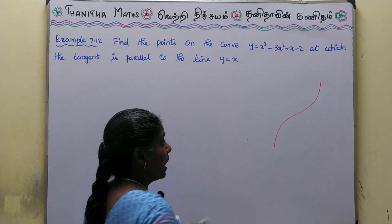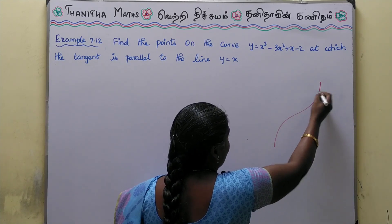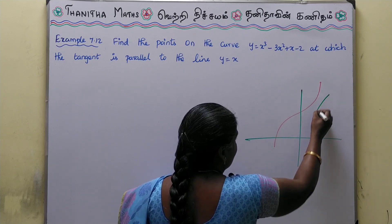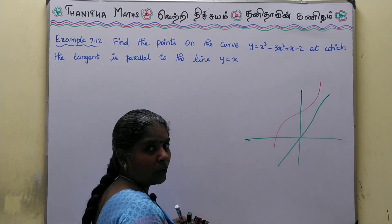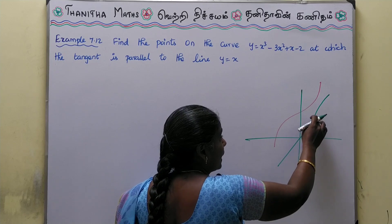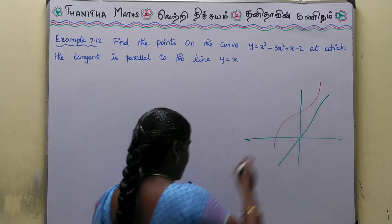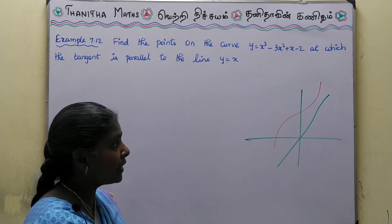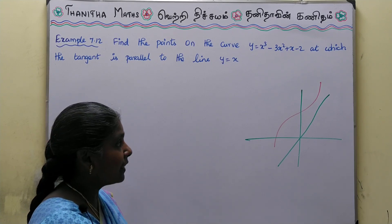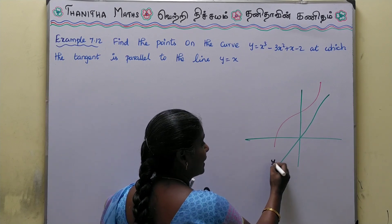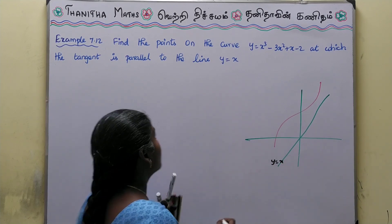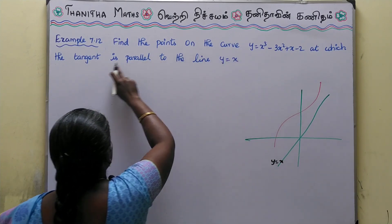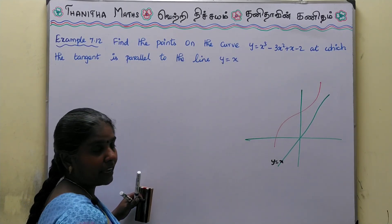So, what is the line y = x? If y = x, it is a line passing almost through the origin. So y = x is the line. We need to find the point on the curve where the tangent is parallel to this line y = x.